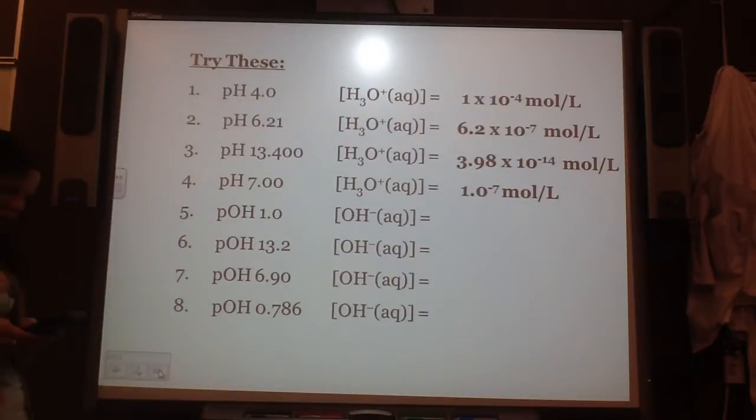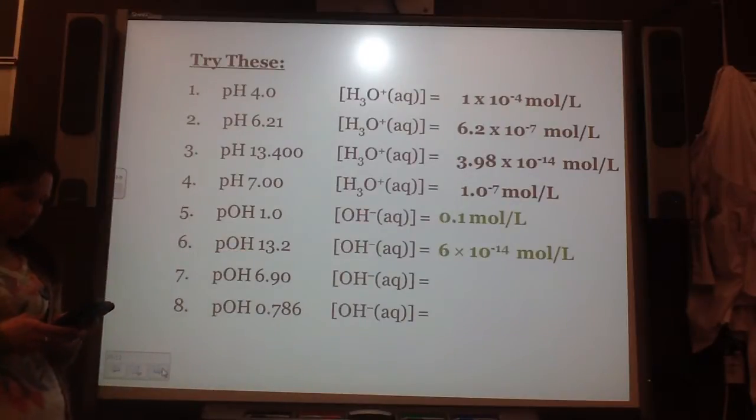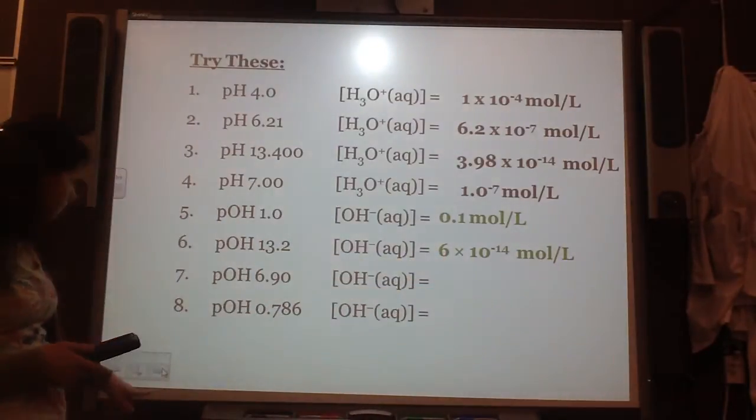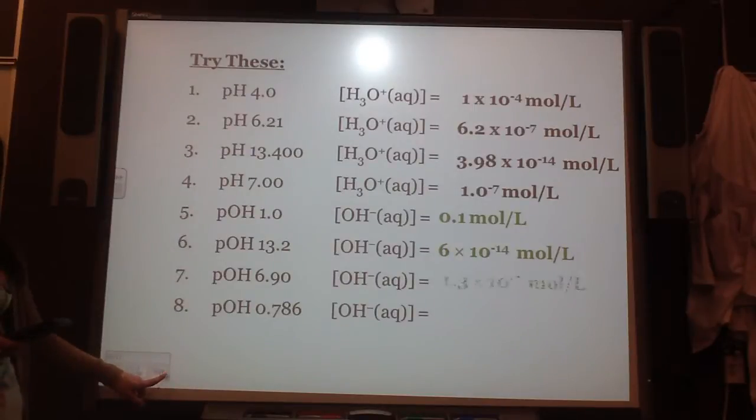So pOH, again, it would be 10 to the power of negative 1, 0.1 mole per liter. Number 6 is 10 to the power of negative 13.2. So you get like 6.3095, but you can only have one significant digit because there's only one sig dig here. Am I going too slow or too fast? Do you guys have time to punch it in yourself?